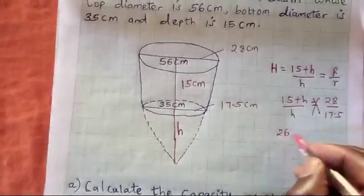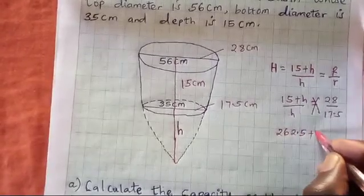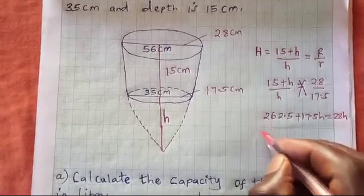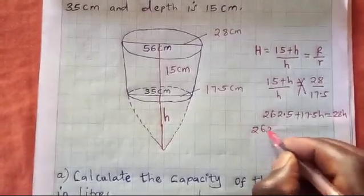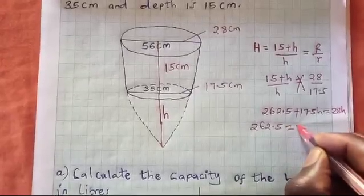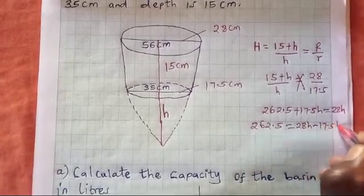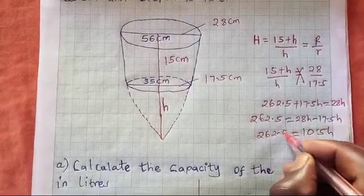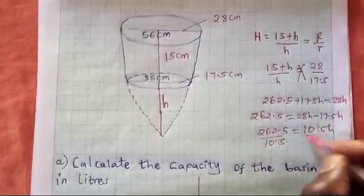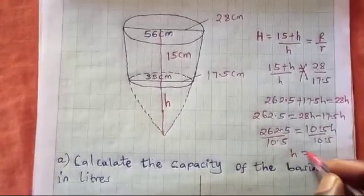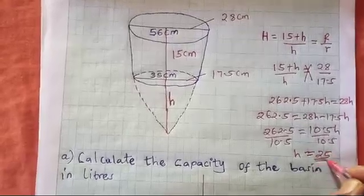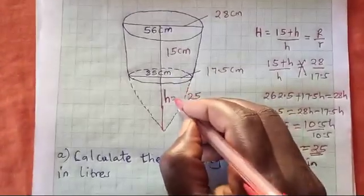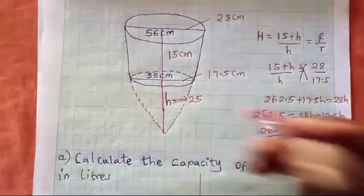Cross multiplying gives us 262.5 + 17.5h = 28h. Putting like terms together: 262.5 = 28h − 17.5h, which gives 10.5h = 262.5. Dividing both sides by 10.5, the smaller h is 25 centimeters.